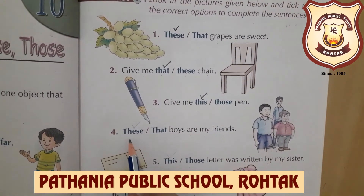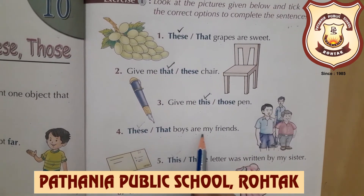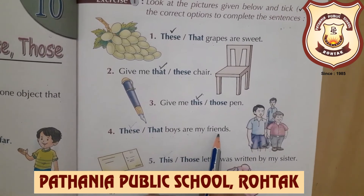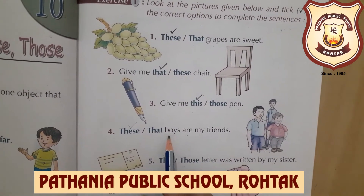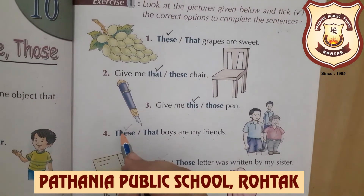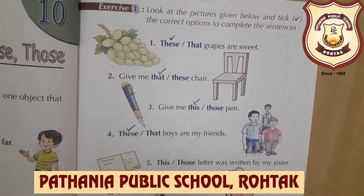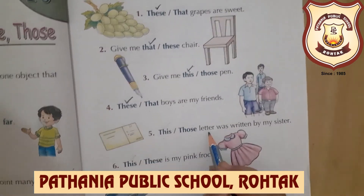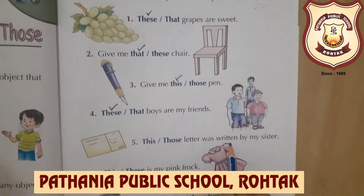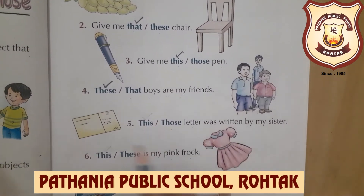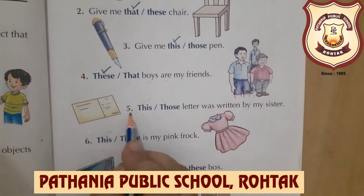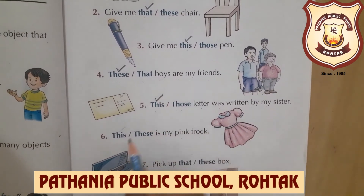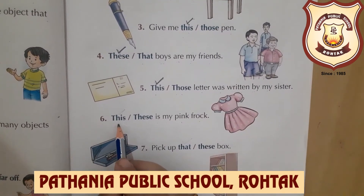Now: these or that boys are my friends. Boys are more than one, so what do we use? These. These boys are my friends. Next: this or those — the letter was written by my sister. The letter is one, so we use 'this'. This letter was written by my sister.